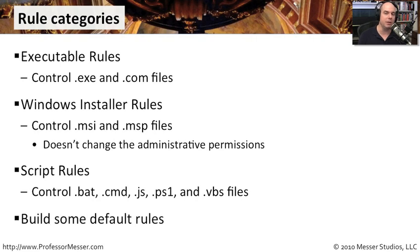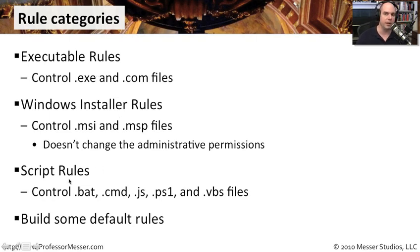Just keep in mind that there are also a number of default rules you can configure. When you turn on AppLocker for the first time, there are no rules and the default configuration is to block everything. So one thing you can do is go into executable rules and create some default rules, go into installer rules and create some defaults, and script rules and create some defaults. Once you've done that, you can feel confident that the operating system will continue to run properly even though you've turned on AppLocker.